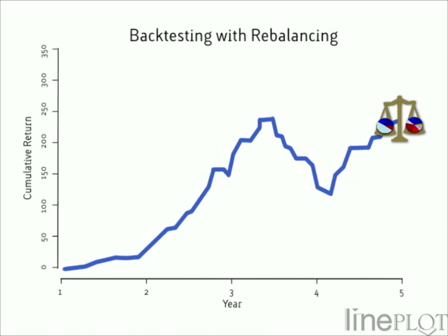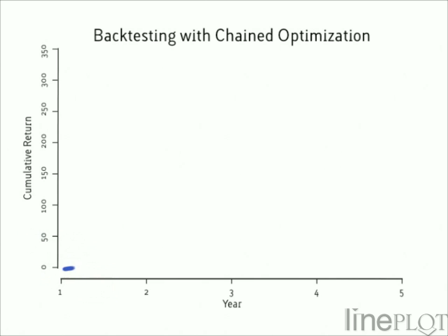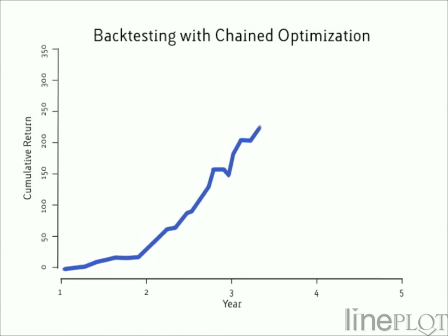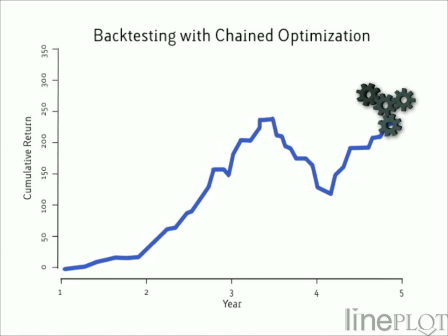To handle changing conditions and new opportunities, investors re-optimise periodically. ART lets a financial analyst backtest a portfolio in this realistic way, re-optimising and rebalancing at specified periods. This chained optimisation only uses the market information that is available at each point, reflecting the time-dependent decision-making that would have taken place.